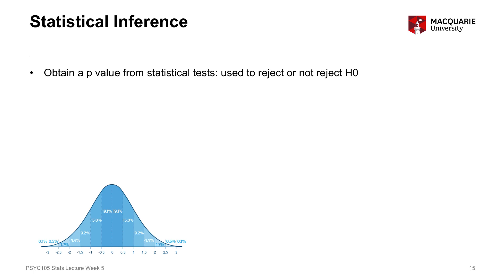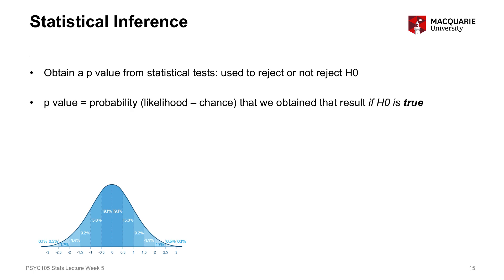That's really the process of statistical inference: we can obtain what's called a p-value — p standing for probability — a probability value that corresponds to our particular test statistic. The p-value tells us the probability, the likelihood, that we have obtained this particular test statistic and this particular pattern of data if the null hypothesis is true. So: what is the likelihood of getting this particular result if there is no relationship between variables in the population, no difference between groups, no effect in the population?